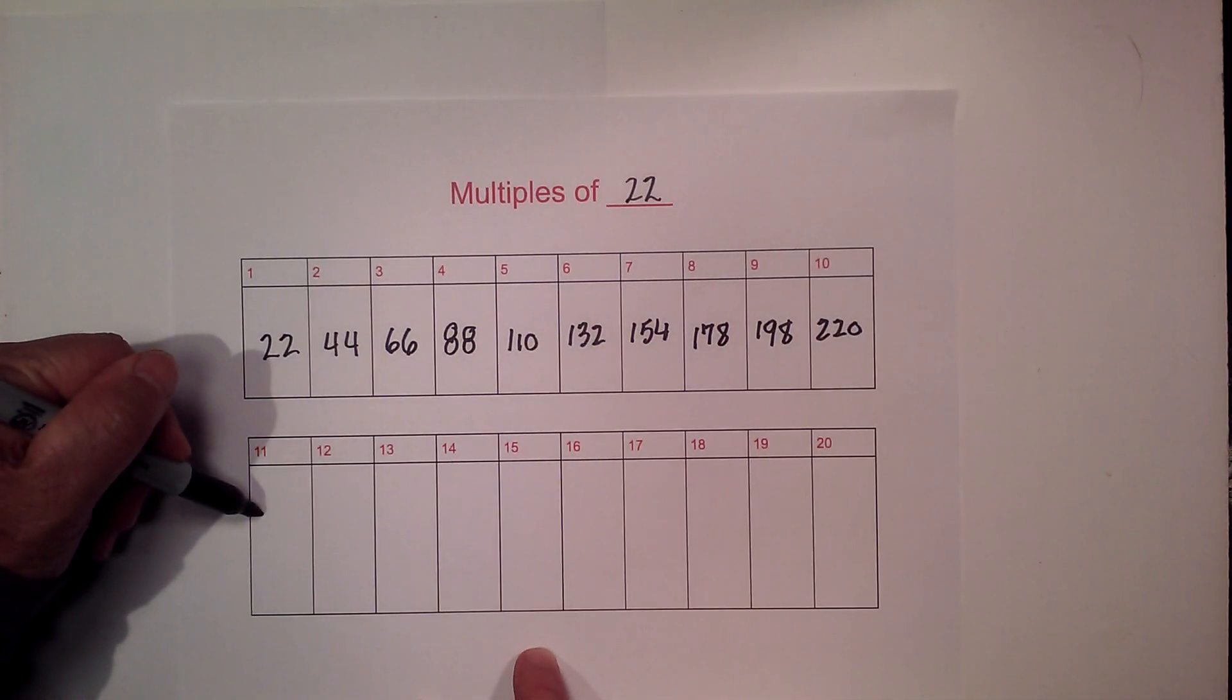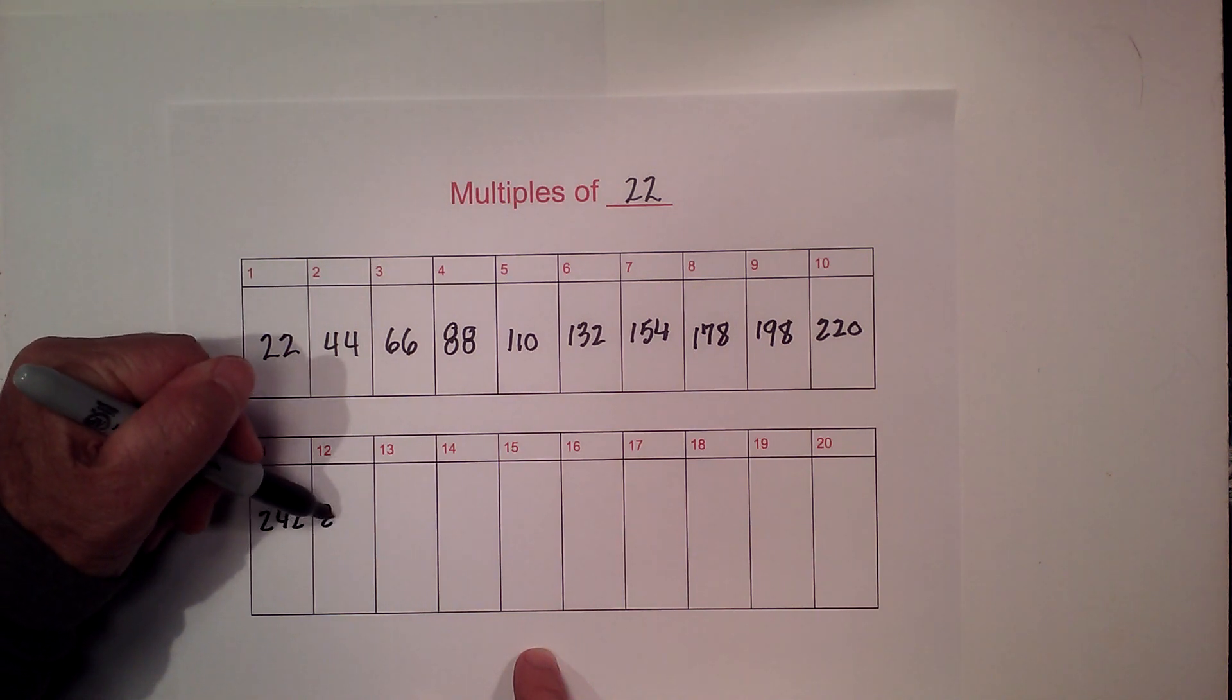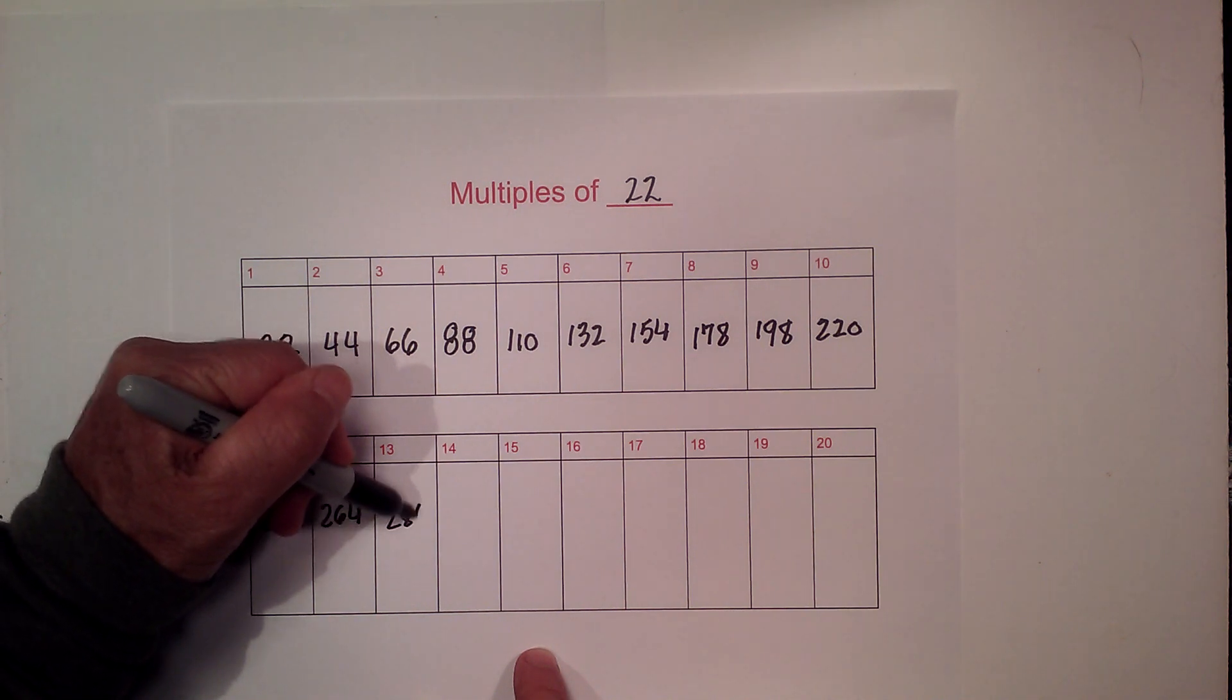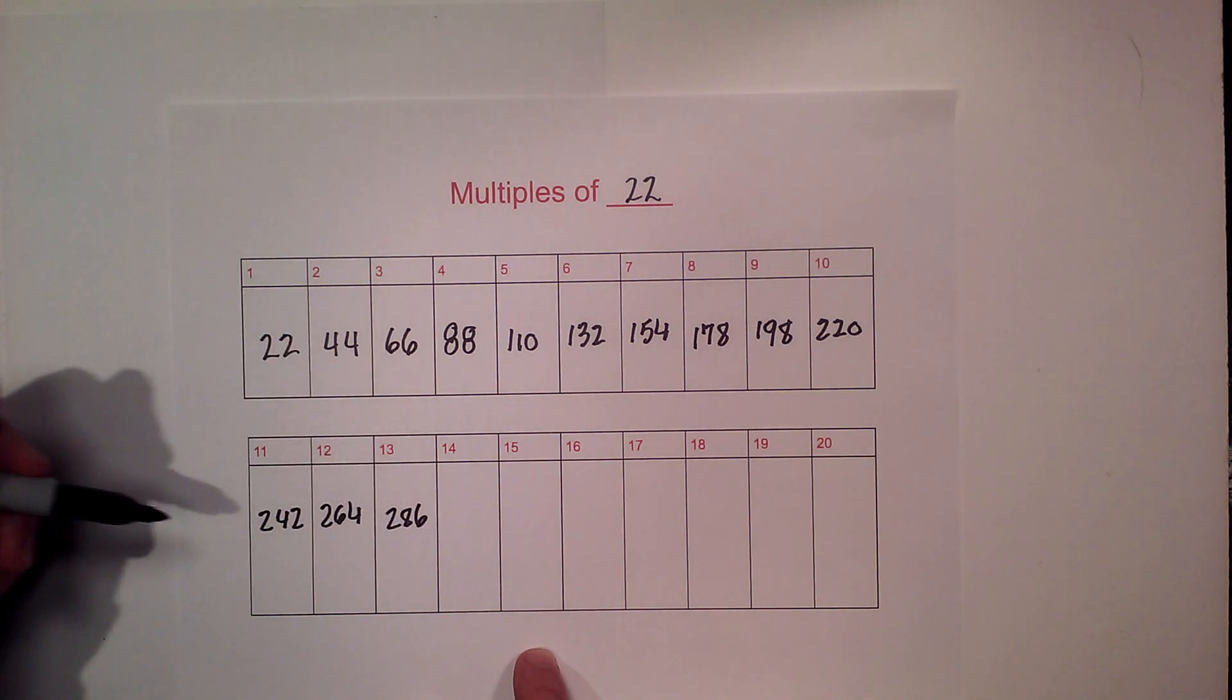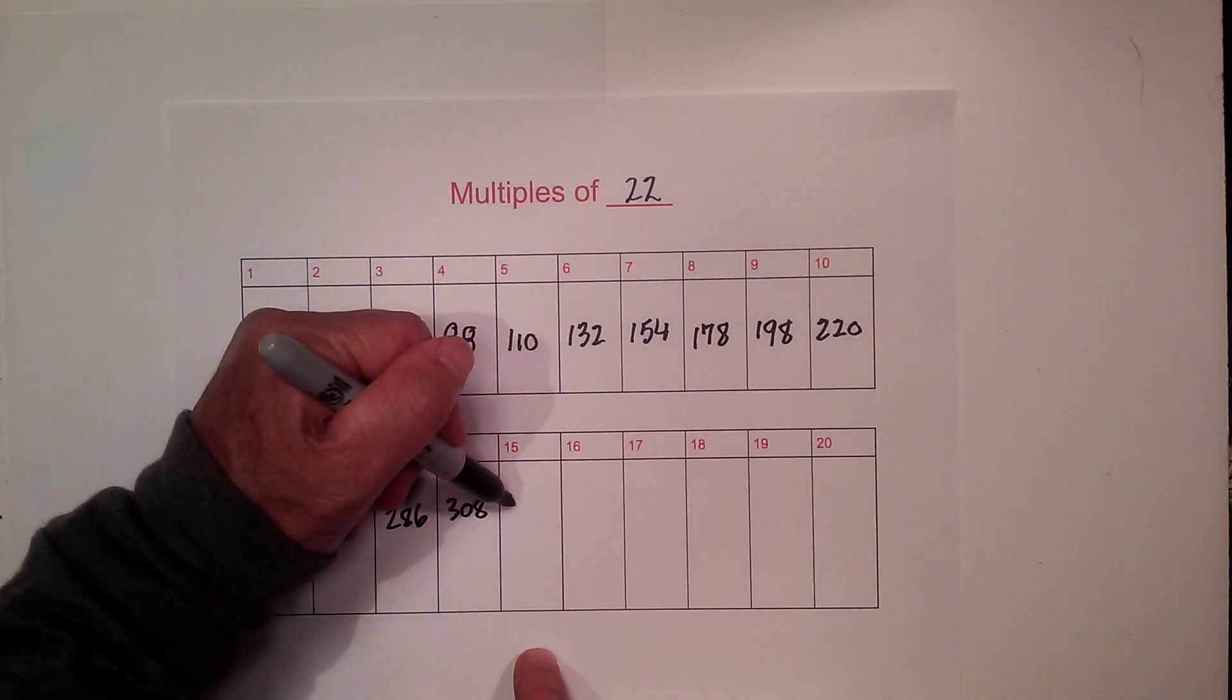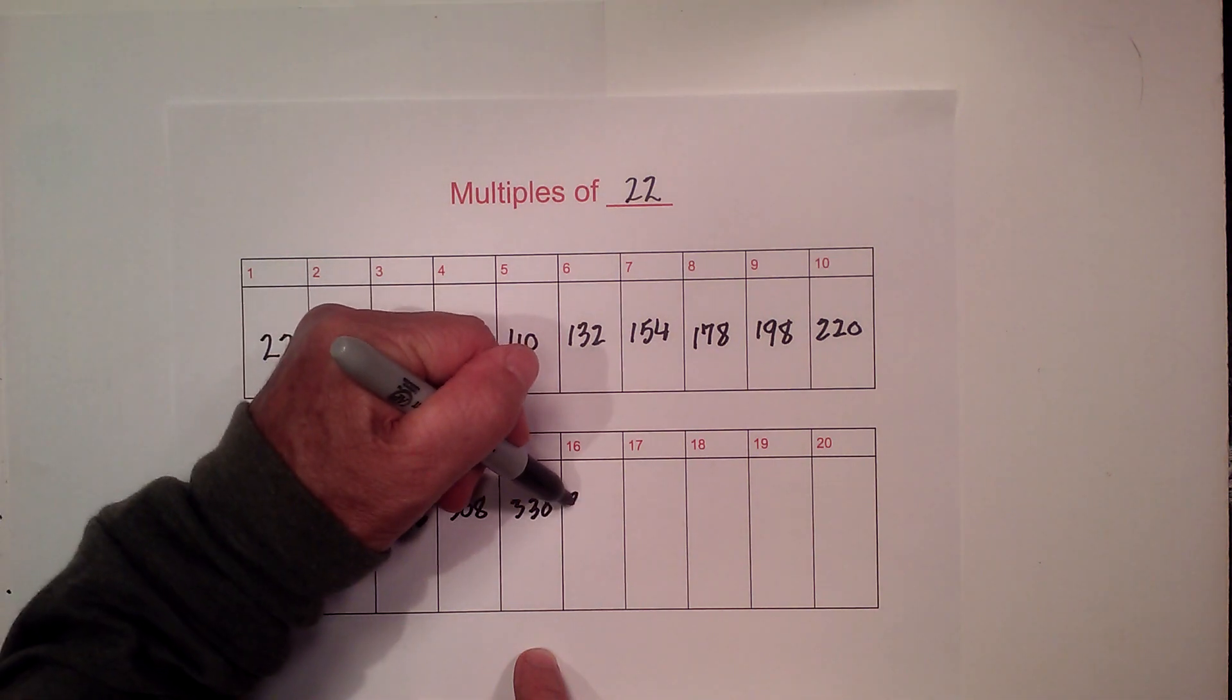Now 22 times 11 is 242, 264, 286. 22 times 14 is 308. 22 times 15 is 330. 16 is 352.